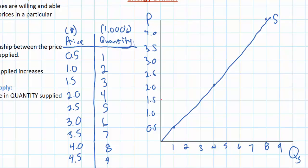As the price of energy drinks increases from $1.50, where the quantity supplied is 3,000, to $2, the quantity supplied increases. A change in quantity supplied refers to a movement from one point — point A — to point B along a supply curve. This is distinct from a change in the supply of energy drinks.